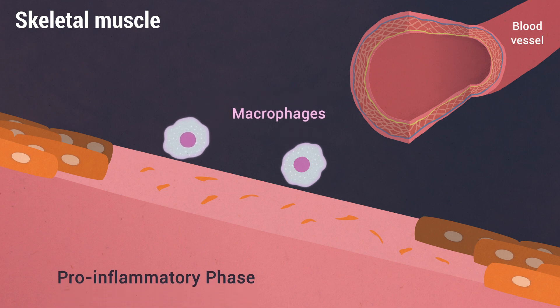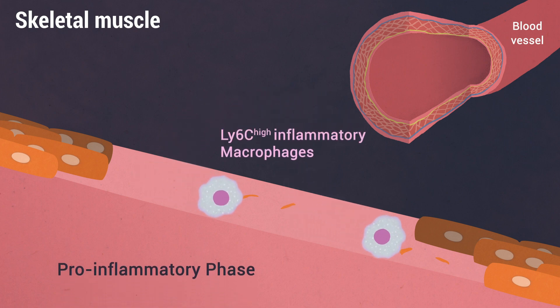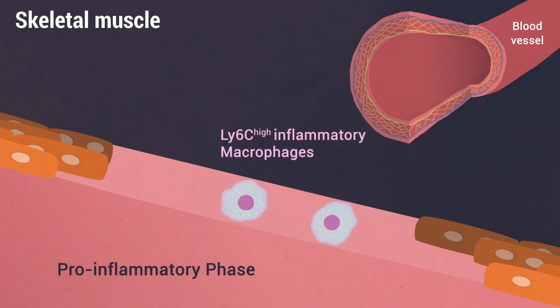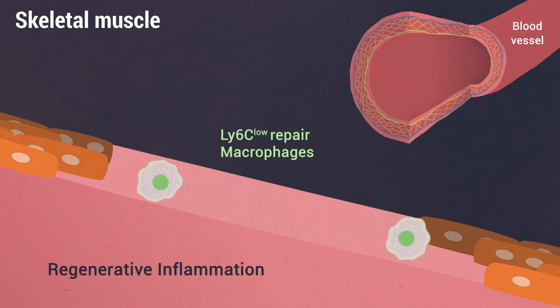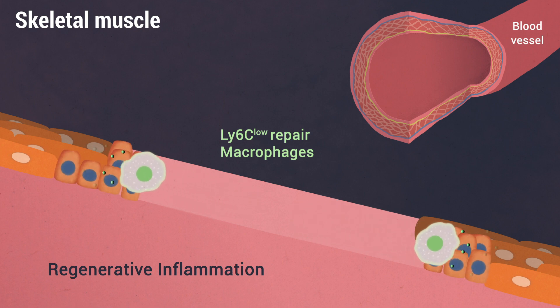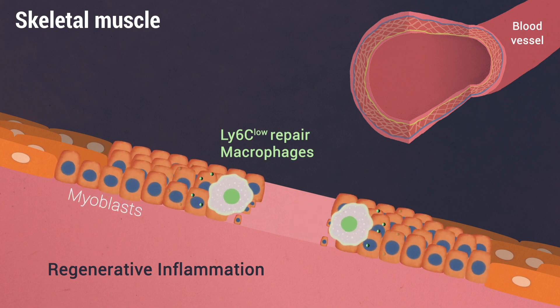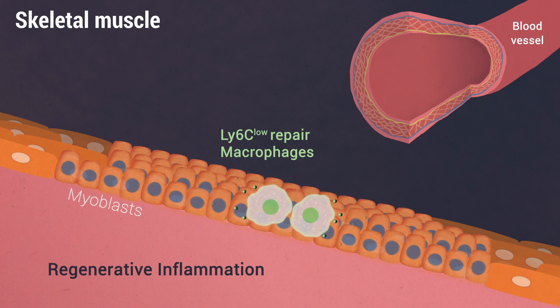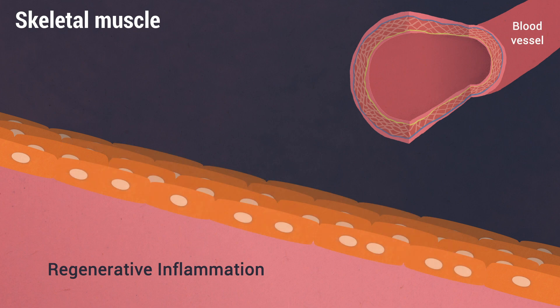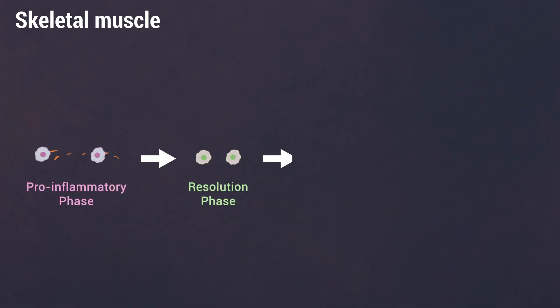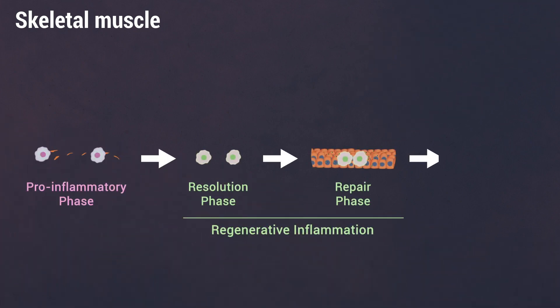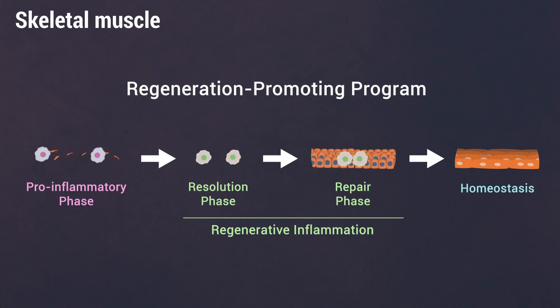First, these cells sense and react to the injury, remove necrotic debris, and then transition to initiate tissue restoration through the production of effectors such as growth factors. The orchestrated sequence of regenerative inflammatory events, called the Regeneration Promoting Program, is essential for proper repair.